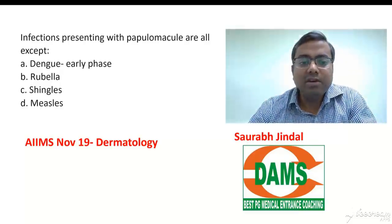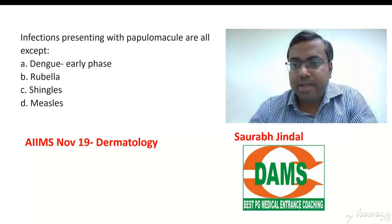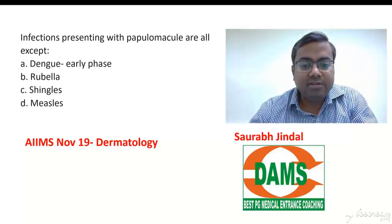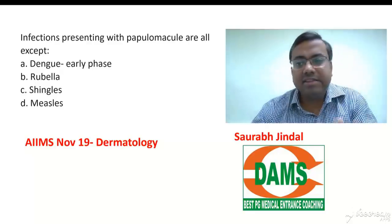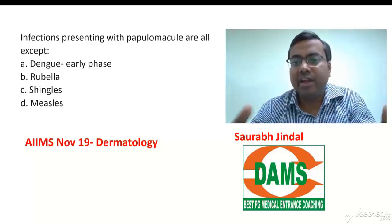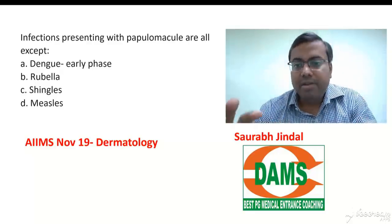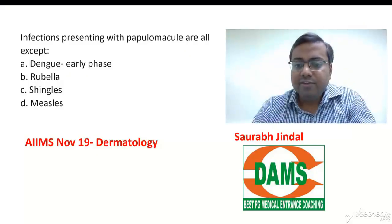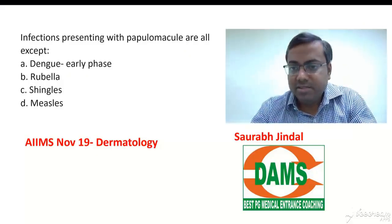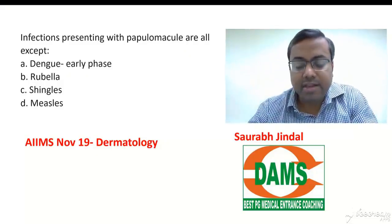The early phase comes at about one to two days after the onset of fever and it is a very transient flushing kind of rash. That's because of capillary dilatation. That's the first rash and it then tends to subside.